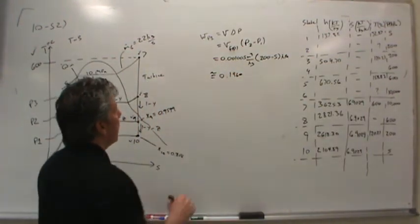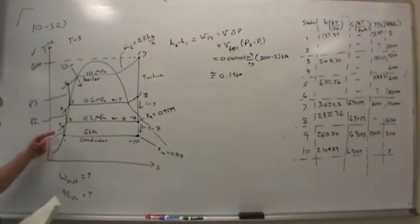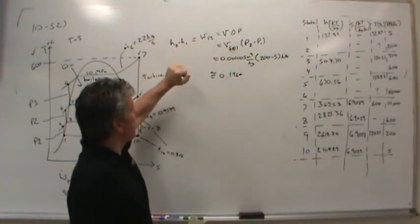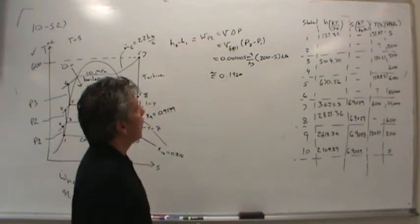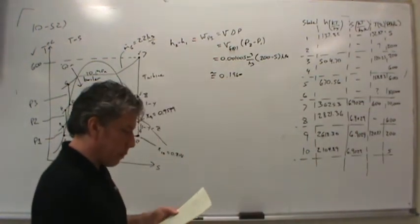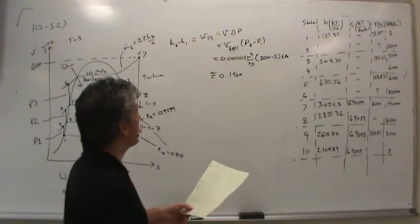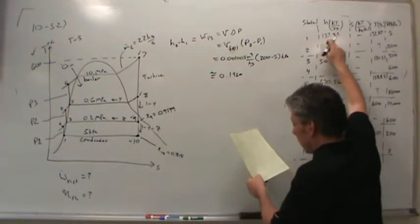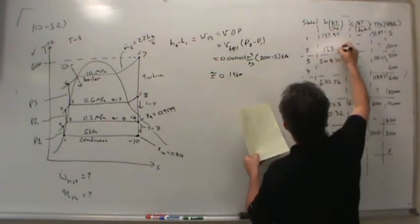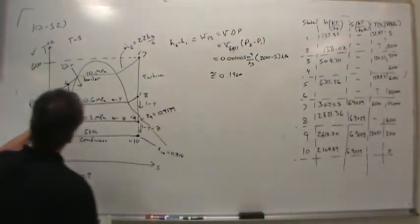This pump work is also equal to the enthalpy change of the liquid from state 1 to state 2. The pump is raising the energy of the fluid and that comes out as enthalpy. So we can actually calculate the enthalpy in state 2: if we add that 0.196 to 137.82, you come up with about 138.02 kilojoules per kilogram.